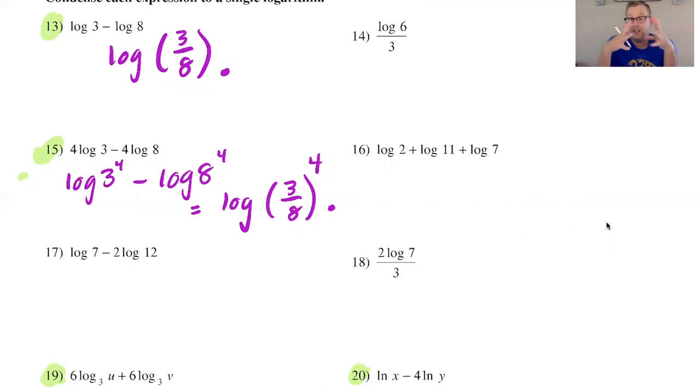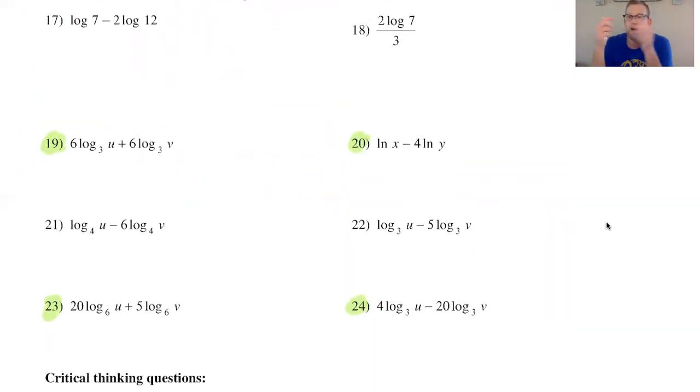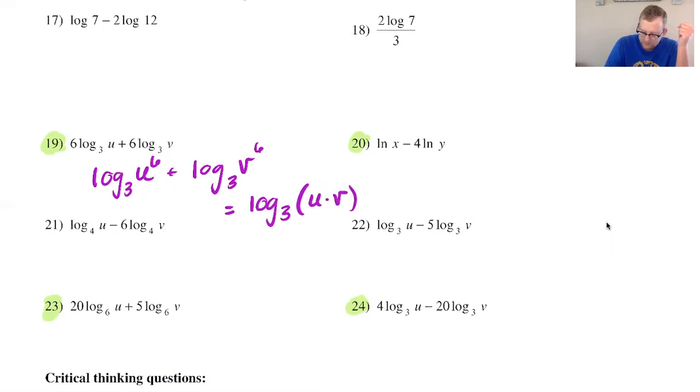Number 19, I look at both of my log terms and I see they both do have the same base which is three in this case and they both have the same coefficient out in front so I know I will have the log base three of u to the sixth plus log base three of v to the sixth and since this is a sum of two logs I know I'll have log base three of u times v to the sixth power.